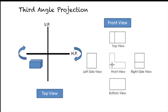In third angle projection, to draw front and top views, the object's front and top views are projected on vertical and horizontal planes respectively. Afterwards, to bring views on the 2D plane, as per the rule of projection, the horizontal plane is rotated in the clockwise direction. This rotation brings the top view to the top of the projected front view.